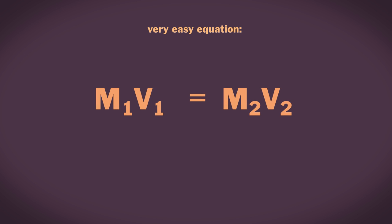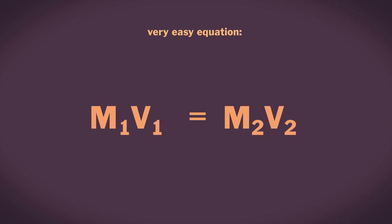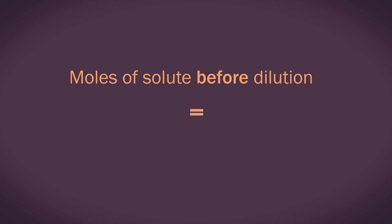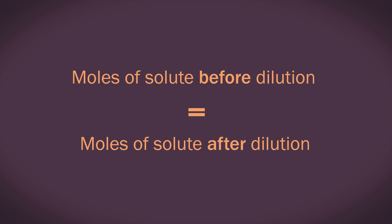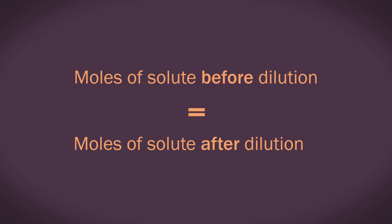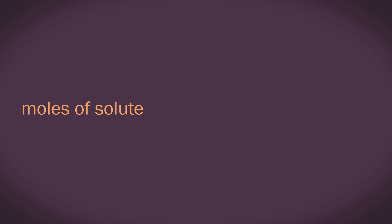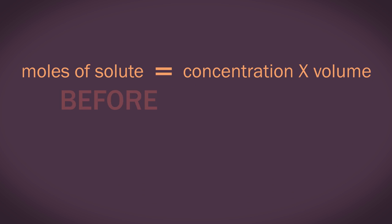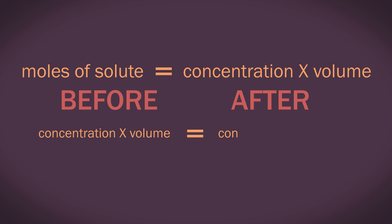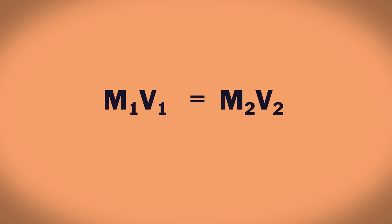Because the moles of the solute stays the same before and after diluting, we can say that moles of solute before dilution equals moles of solute after dilution. And then you should already know that moles of solute equals concentration times volume. We can substitute this in, and we get the concentration multiplied by volume before is equal to the concentration multiplied by volume after. Which is what this equation is telling us.